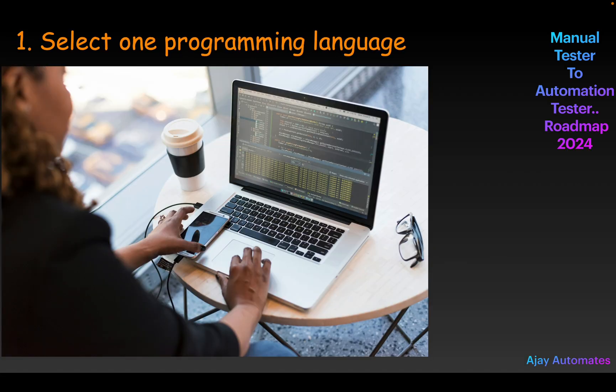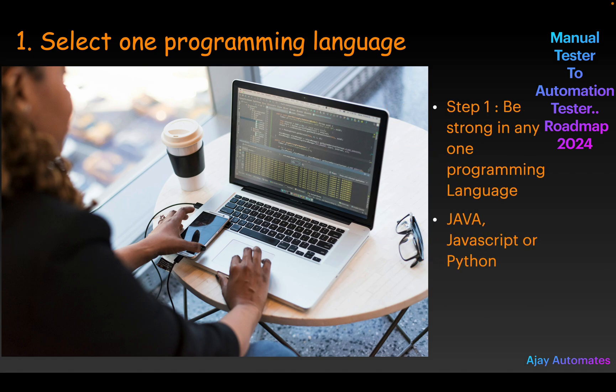The first step is you need to be very good in one programming language. You can either select Java, Python, or JavaScript — these three languages have very good opportunities. You need to be very strong in one particular language; no need to be strong in all of them. For example, if you are learning Java, you need to be very good at explaining OOP concepts, Java collections, and everything from Java.